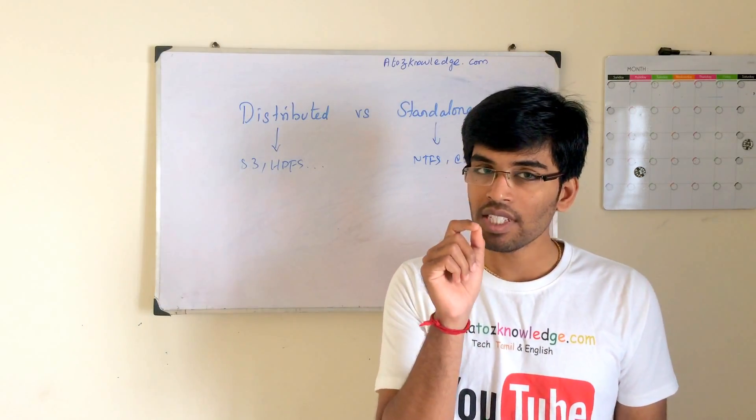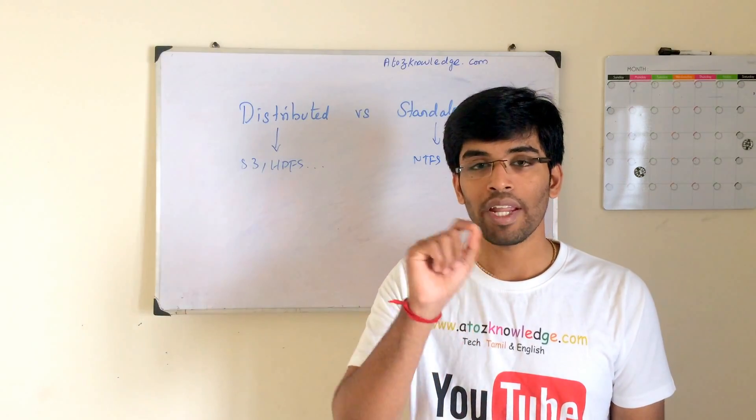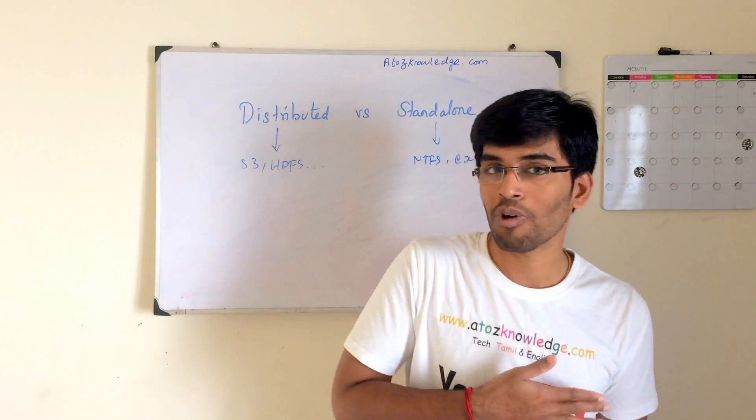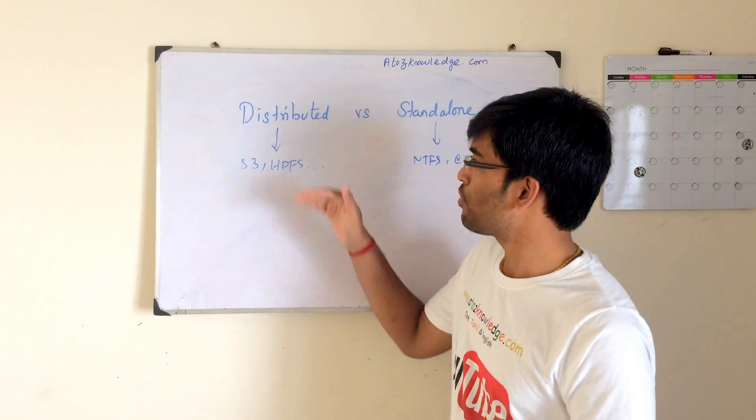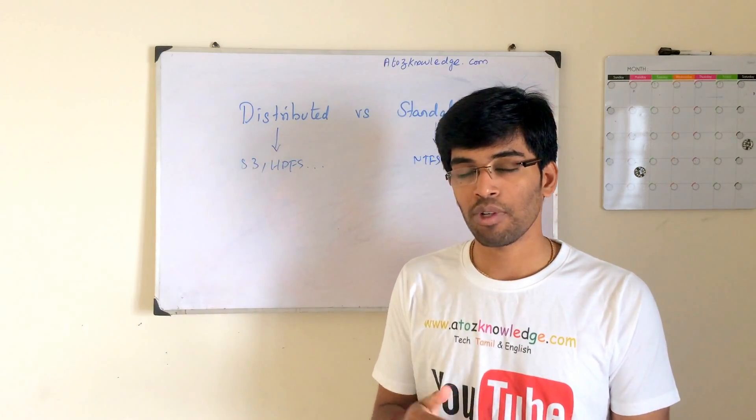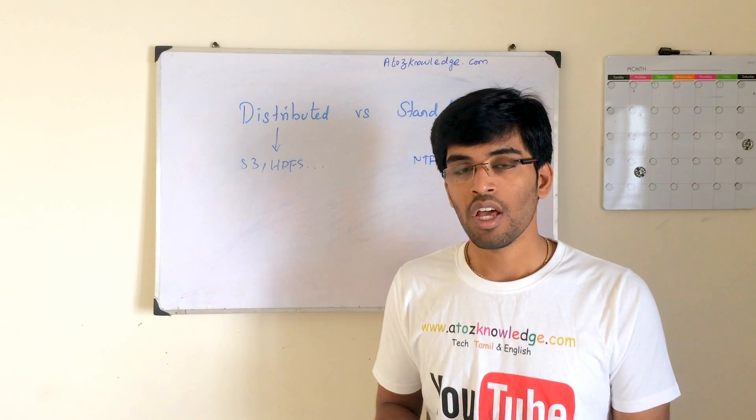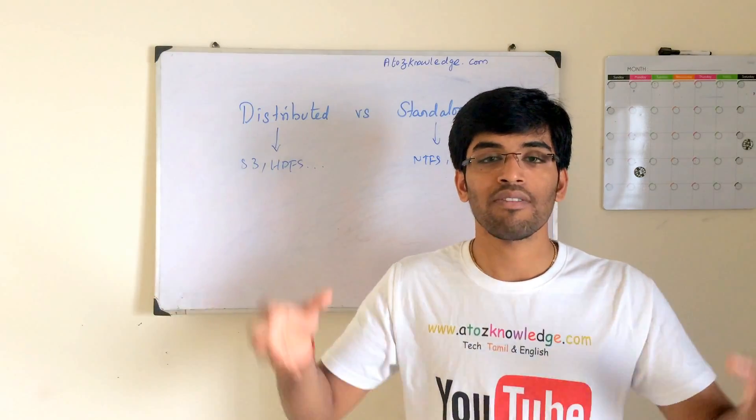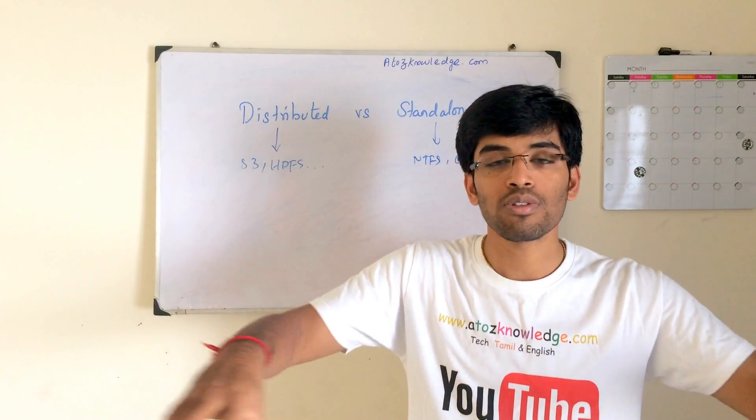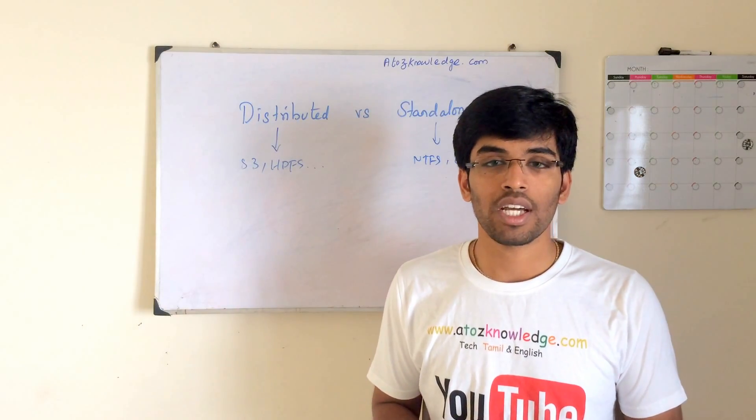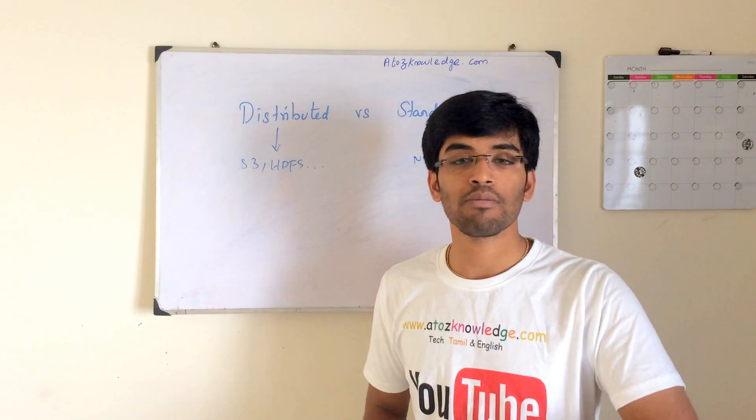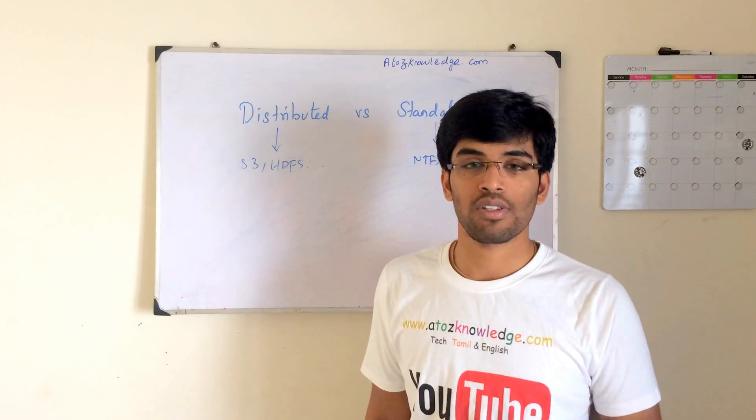See, when we say distributed with respect to any technology, it depends on the data distribution, not on the topology. For example, if you take distributed, what is the use of distributed computing and file system in the first place? When I give some data, the data has to be distributed and when I do process on it, the process also will be in a distributed mode. So that the resource pressure of the particular machine is getting reduced.